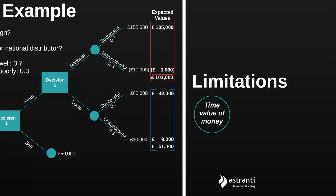The next limitation is that decision trees rely on the accuracy of our estimates. The decisions we can make using these decision trees are only as good as the information we have. So if the forecasts provided to us are far from reality, then our decision tree won't be much help at all.